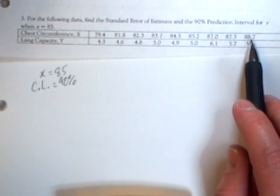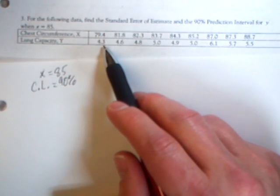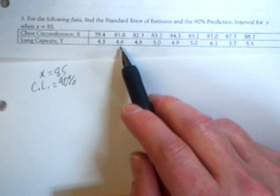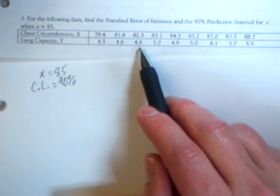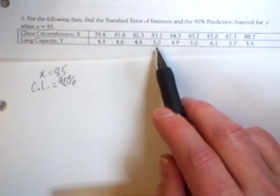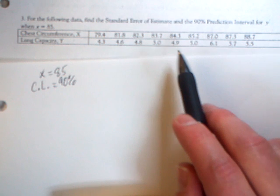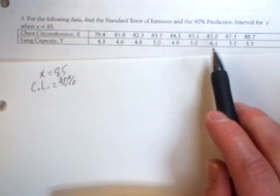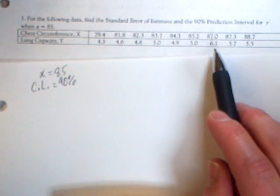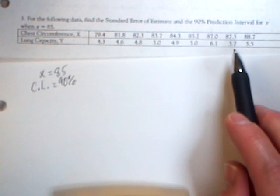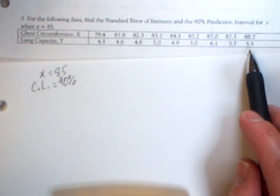Go to L2 and type in 4.3, 4.6, 4.8, 5.0, 4.9, 5.0, 6.1, 5.7, and 5.5. So you should have nine values in L2.